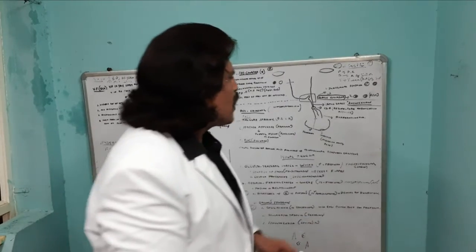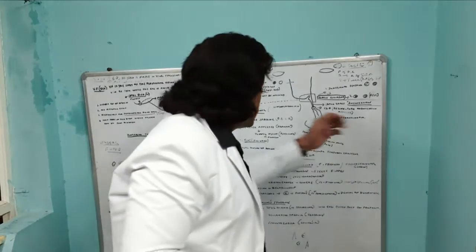Quadrantanopias are common in optic radiations. The radiations go to the parietal and occipital cortex; some fibers travel through the temporal lobe. The parietal lobe is placed superiorly, so parietal radiations cause inferior quadrantanopia. The inferior temporal fibers cause superior quadrantanopia. So quadrantanopias are very common in optic radiation lesions.